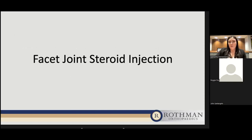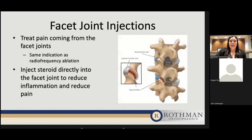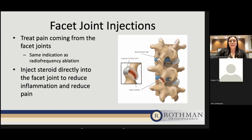Briefly, I'll also go over facet steroid injections. These have the same indication as radiofrequency ablation, but instead of severing or blocking the nerves innervating the joint, this involves injecting steroid directly into the facet joint to reduce inflammation and reduce pain — similar to steroid injections patients might have received into their knees for arthritis. The setup uses the same oblique view to enter into the facet joint itself rather than targeting where the nerve wraps around the joint. After the procedure, it can take up to two weeks for the steroid to take effect, and there are usually no activity restrictions.